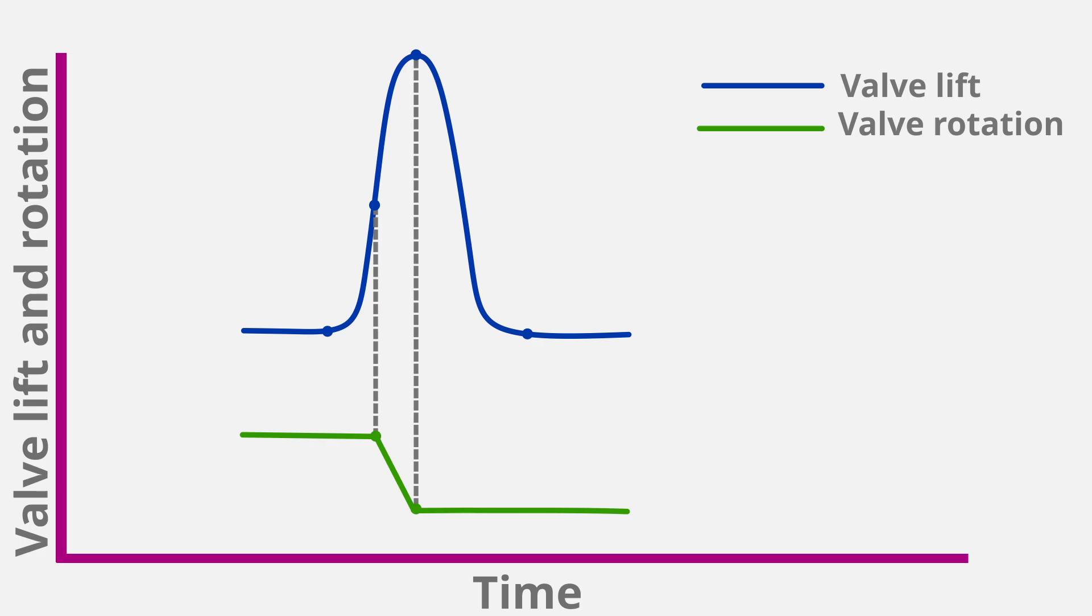Now let's understand this graph which plots valve lift and valve rotation against time. Point 1 represents the start of valve lift. Line 2 which connects points on both graphs represents the start of valve rotation. Line 3 represents the valve at the peak and end of valve rotation. Point 4 represents valve closure. Thus, we can see that valve rotation doesn't start until after the valve begins to open. We will see this later in the animation.